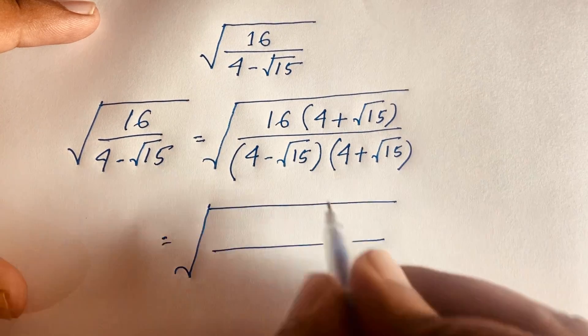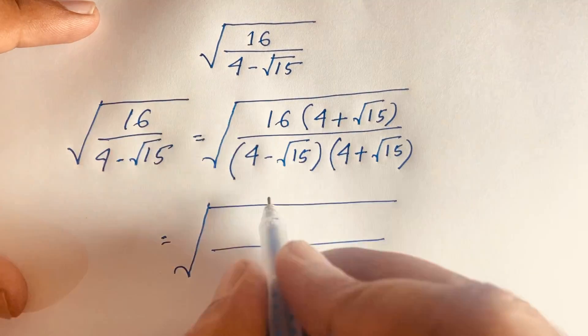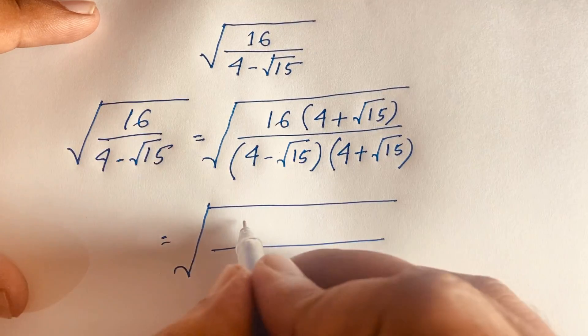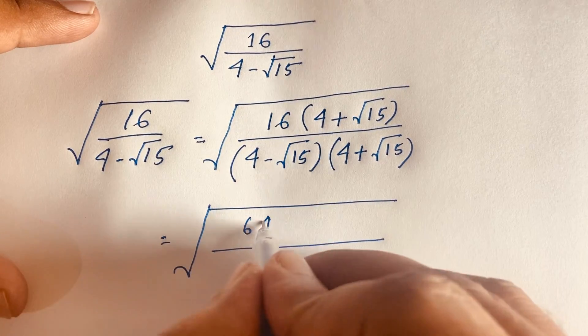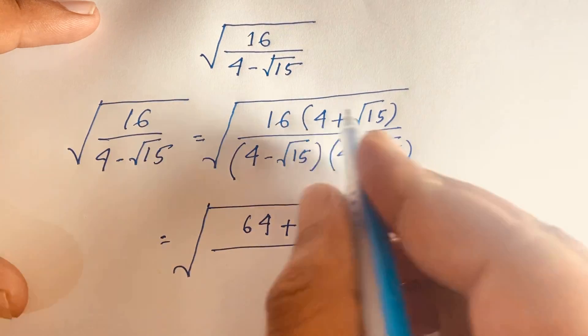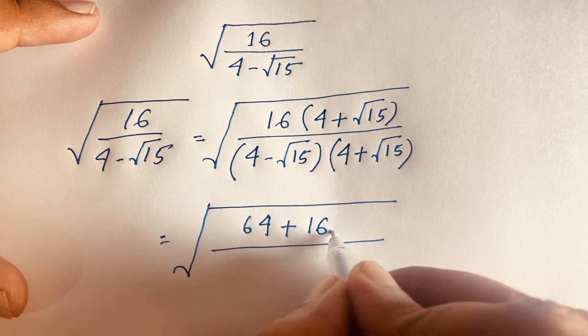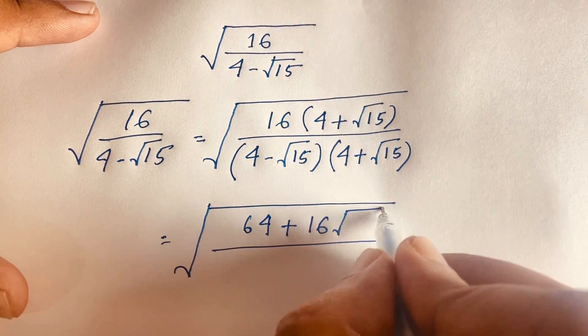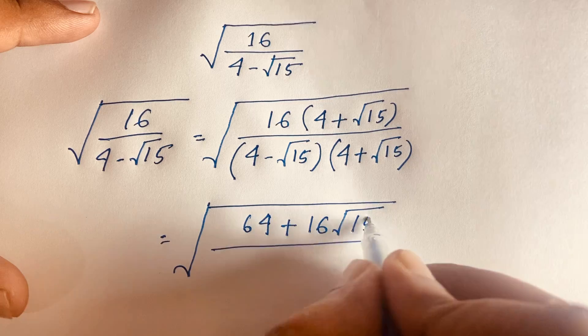In the numerator: 4 times 16 gives 64, and square root 15 times 16 gives 16 square root 15.